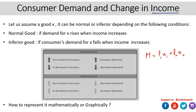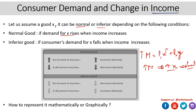Based on that, let us assume a good x1 — it can be normal or inferior. For simplicity, I am naming the two commodities x and y. For a normal good, if the demand for x rises — say the demand goes up with an increase in income — so income increased, which implied an increase in demand for x, it implies that this is a normal commodity.